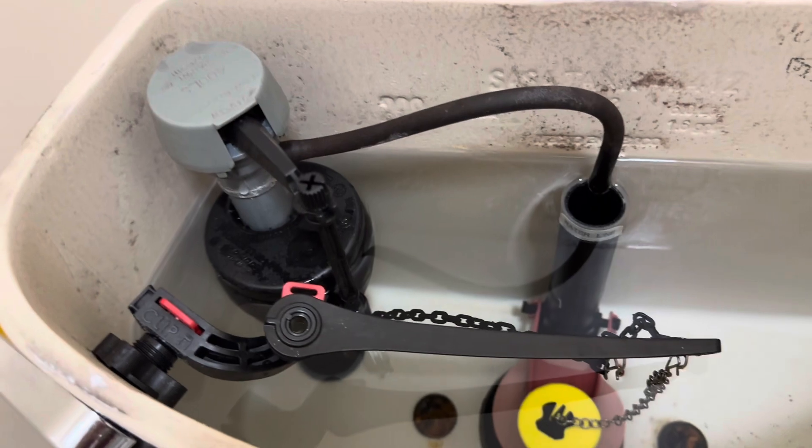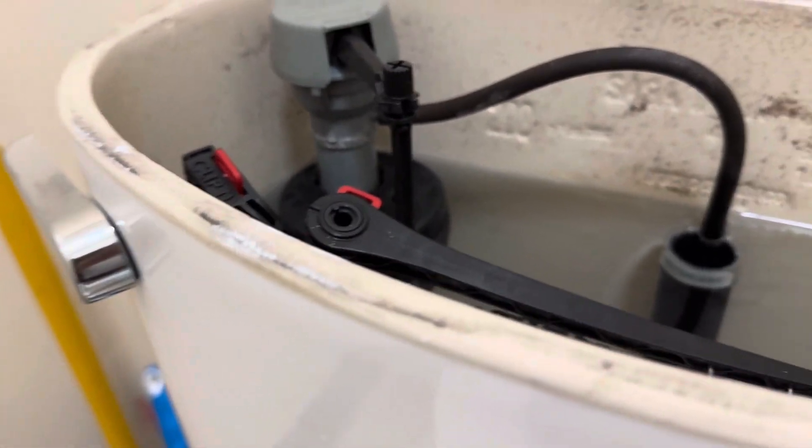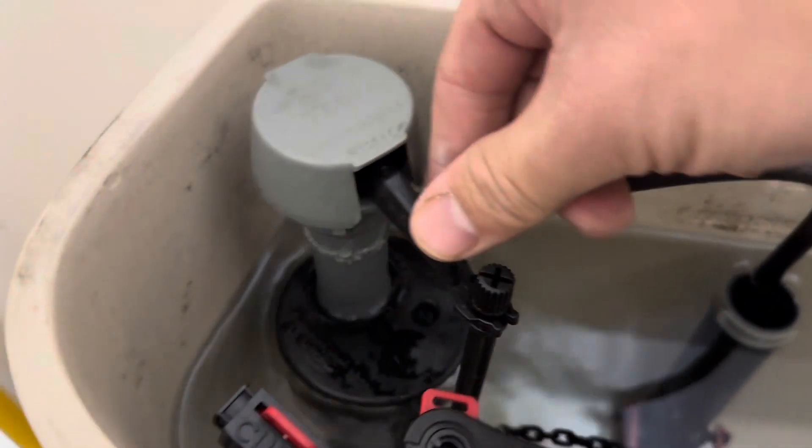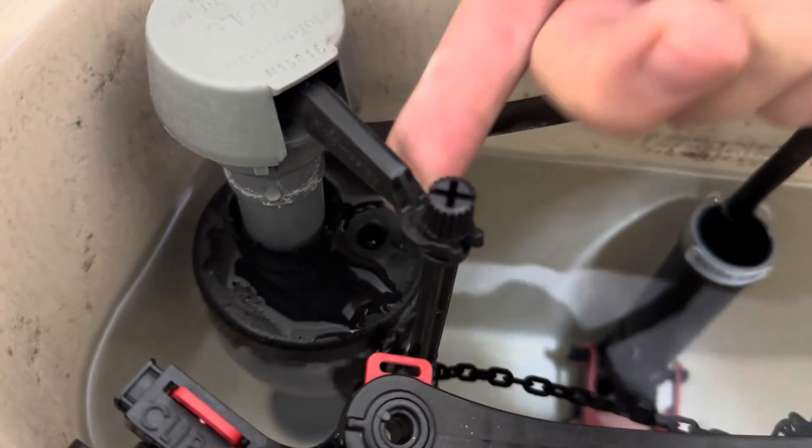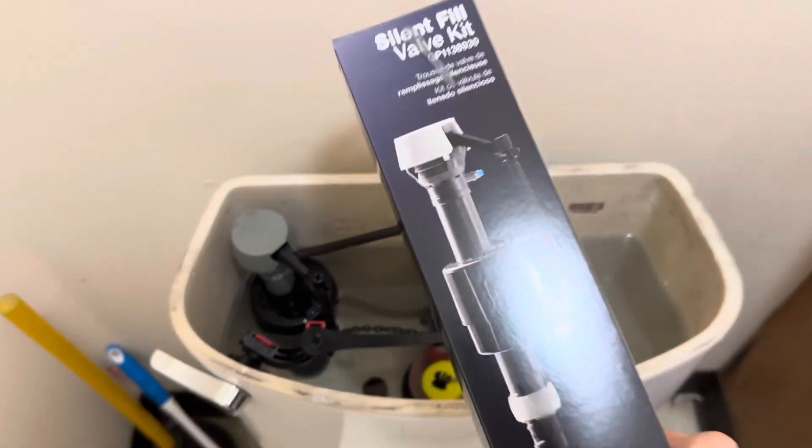So this valve is not turning off no matter what we do. Basically this is on, and when it's up it should turn off, but it's not turning off the water. So we're going to do a full replacement.